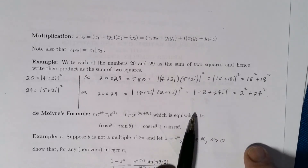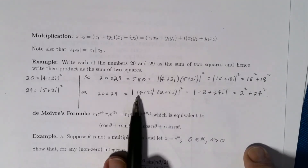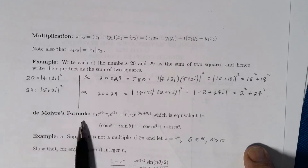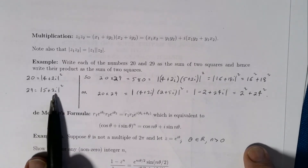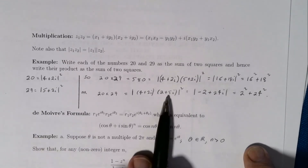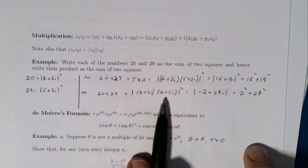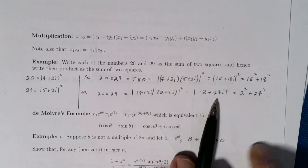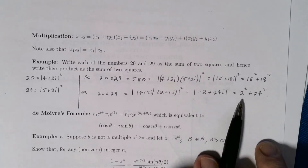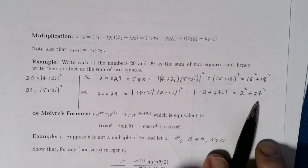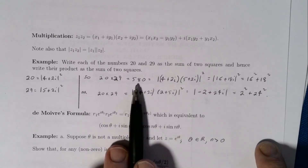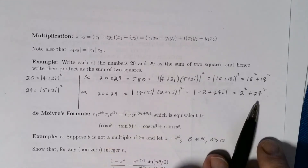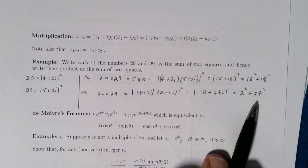Alternatively, keeping 4 + 2i and writing 29 as 2 + 5i instead, when you multiply these out you get −2 + 24i, giving 2² + 24², another way of writing 580 as the sum of two squares. You might like to experiment to see if there are other ways of writing this number as the sum of two squares.